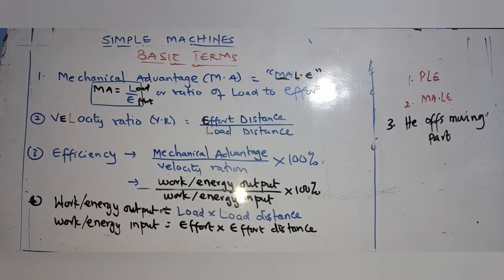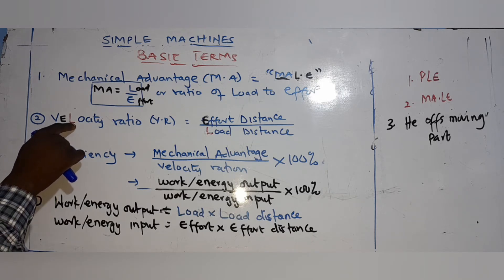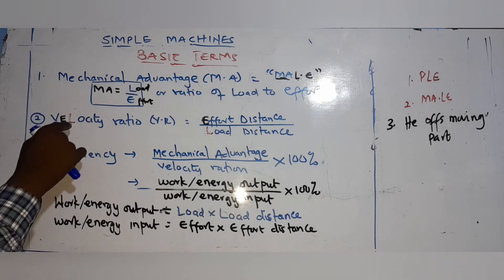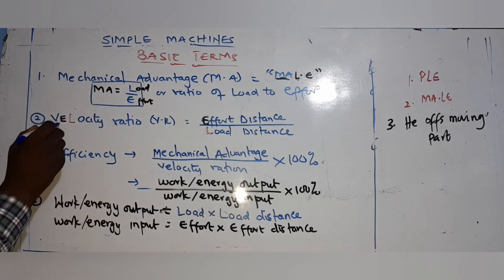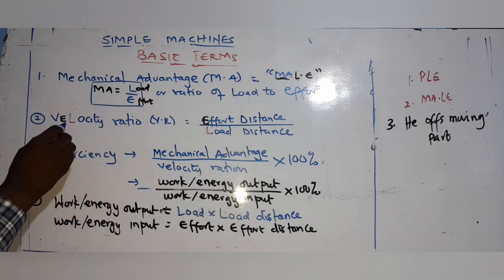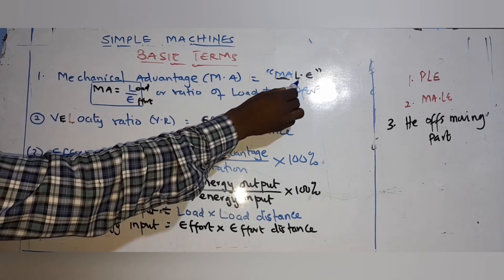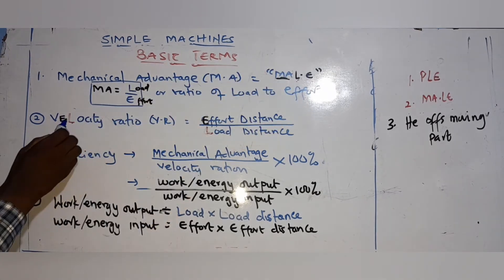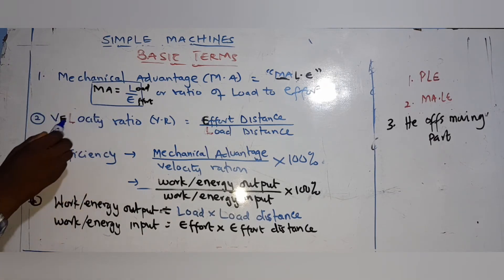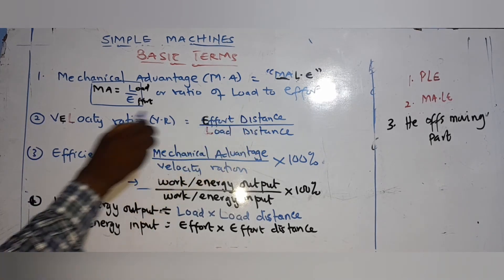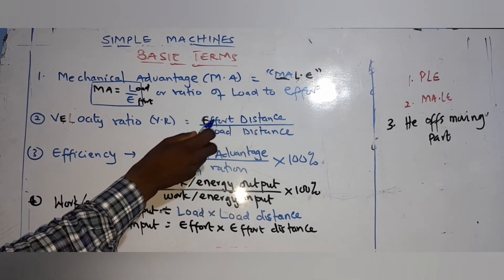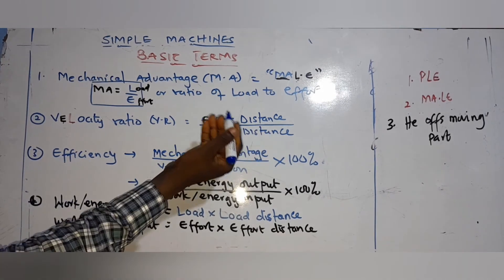The second term is velocity ratio. Remember the mnemonic 'VEL': velocity talks about distance, and in VEL, E comes before L, so it is Effort Distance over Load Distance. Velocity ratio equals effort distance divided by load distance. In a definition sentence, you can write: the ratio of effort distance to load distance.